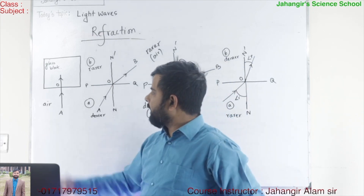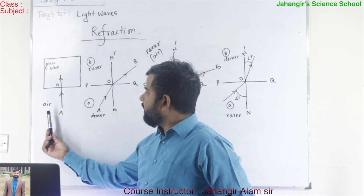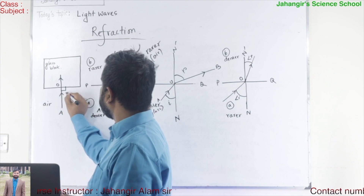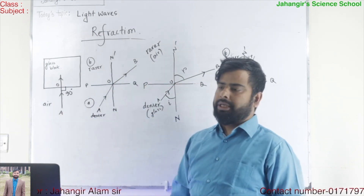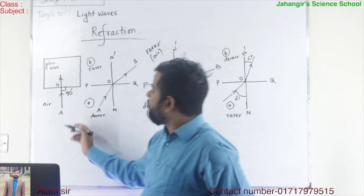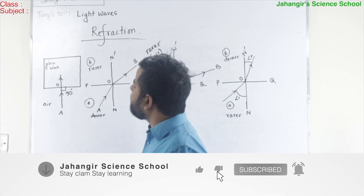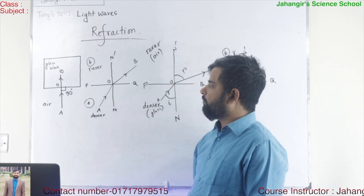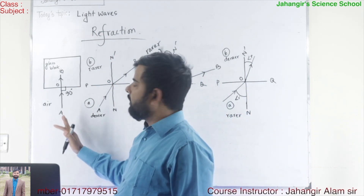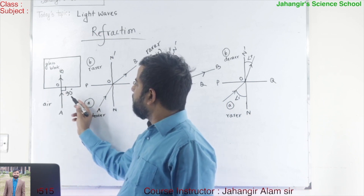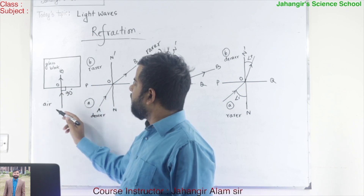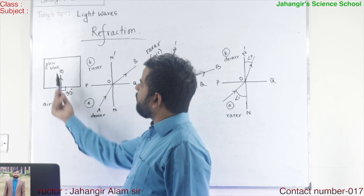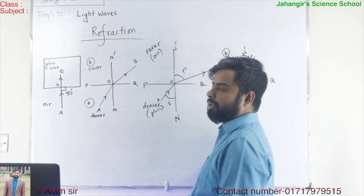So look at the first diagram. Here a light ray incidences on a glass block perpendicularly — perpendicularly means at 90 degree angle — then it goes straight without bending. Here AO is the incident ray and OB is the refracted ray. So when a light ray incidences at a 90 degree angle with the glass block, then it goes straight without any type of bending. So when light ray passes from one transparent medium to another transparent medium perpendicularly, then it goes straight without any type of refraction.